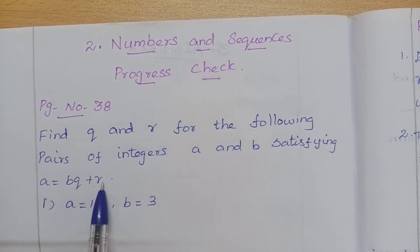So Q is a quotient, R is a divisor, sorry reminder, R is a reminder.